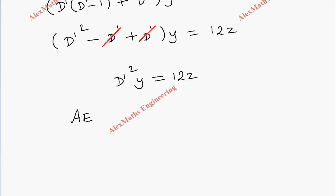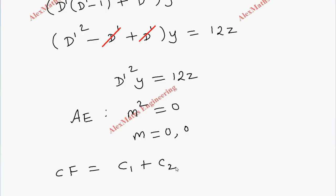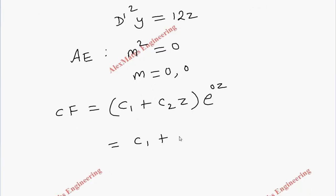As the first part of solving, we write the auxiliary (ancillary) equation: m² = 0. We get two values for m, both zero. Since we get two real equal values, the complementary function is (c1 + c2·z)·e^(mz). Since m = 0, e^0 = 1, so we are left with c1 + c2·z, and replacing z with log x gives CF = c1 + c2·log x.